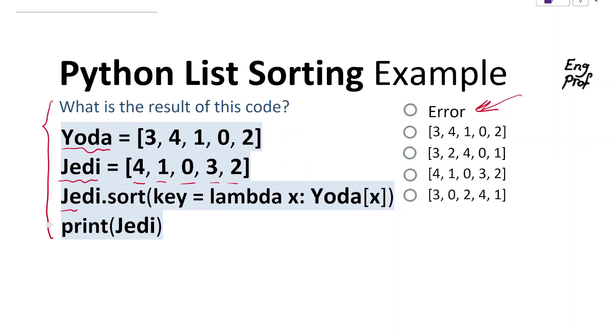In the third line, we're sorting the Jedi list using the sort method. The key for sorting is a lambda function that picks elements from Jedi and uses Yoda as the guideline to sort them. Then finally, we print the sorted Jedi.